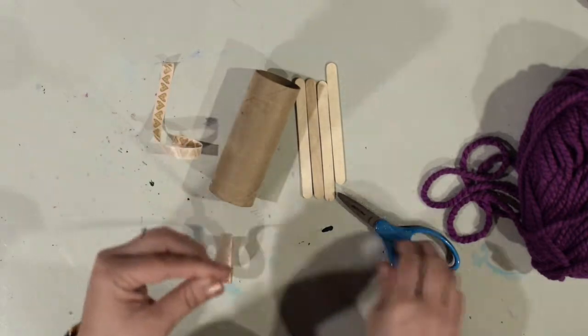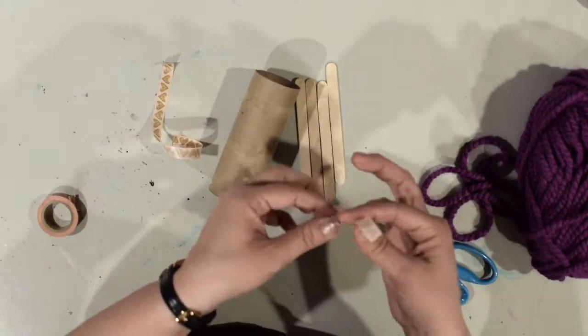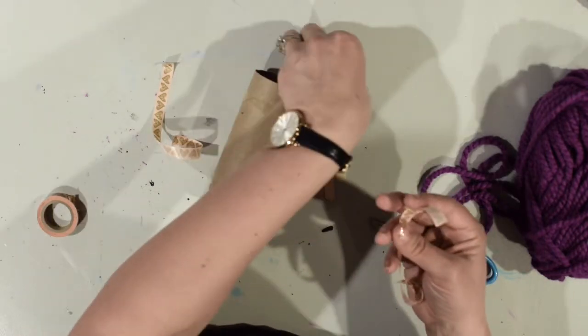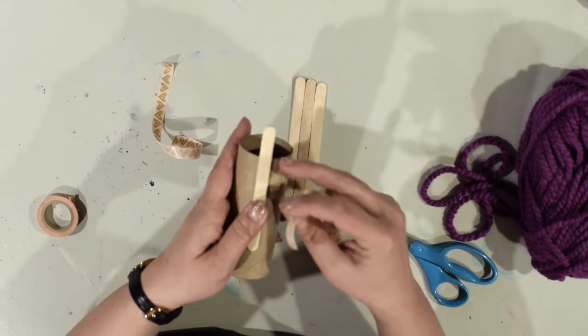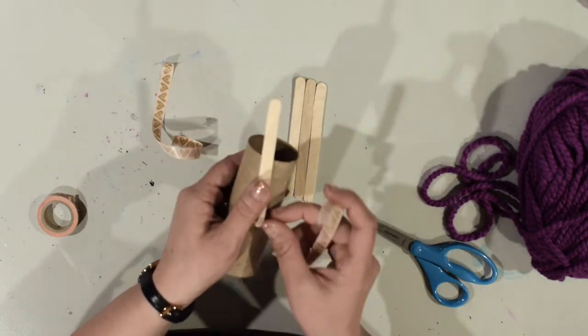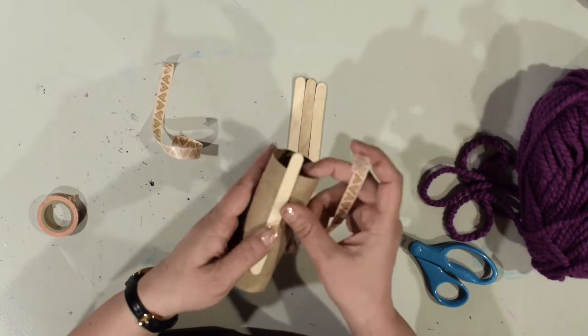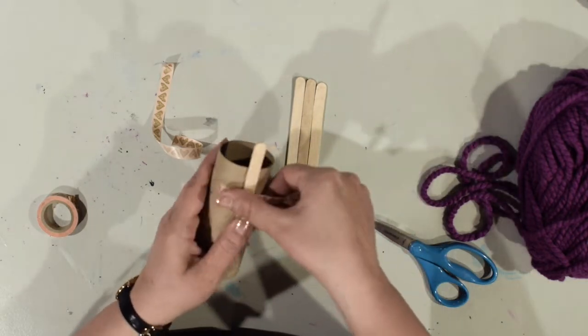I'm going to take one of my popsicle sticks and I'm going to set it on top. Now notice how much it's sticking off - it's about an inch or so. You don't want it sticking way far off and you don't want it to be too short like this. You want it to be about an inch, and I'm going to go ahead and tape that down.